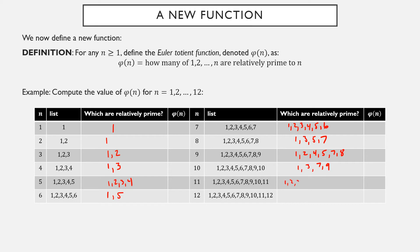1, 3, 7, and 9 are relatively prime to 10. 1, 2, 3, 4, 5, 6, 7, 8, 9, and 10 are all relatively prime to 11. 1, 5, 7, and 11 are relatively prime to 12, but not 2, 3, 4, 6, 8, 9, 10, or 12.